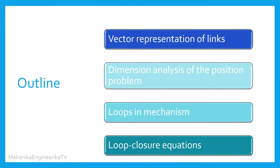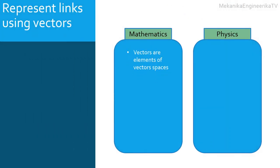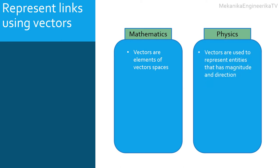Let's start now with the first part, which deals with the vector representation of links. In mathematics, vectors are elements of vector spaces. They are used in physics to represent physical parameters or entities that have magnitude and direction. The position vector of a link has both a magnitude and direction, thus vectors are suitable to represent the position of a link. In mathematics, vectors can be expressed as a linear combination of the vectors of a given basis.